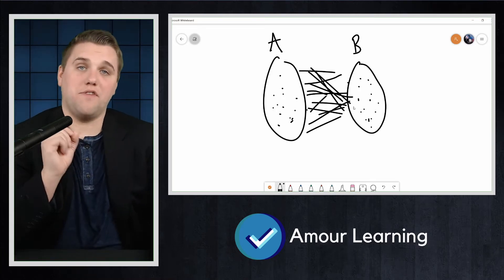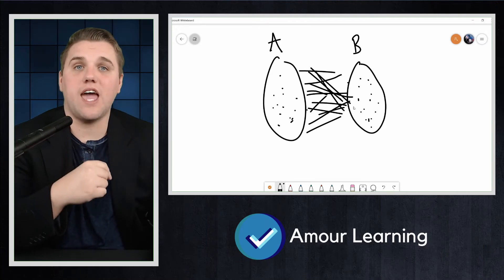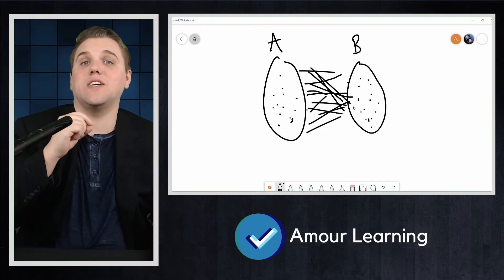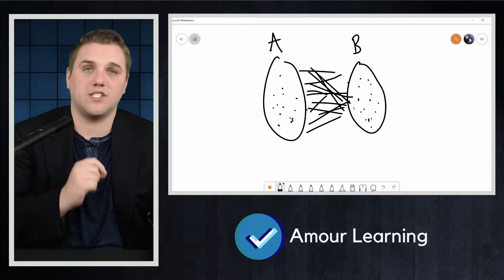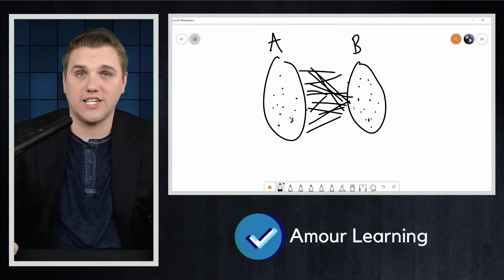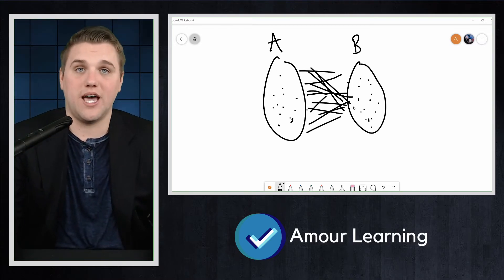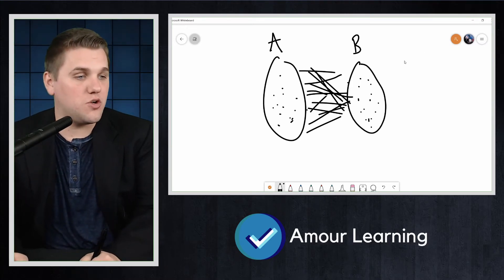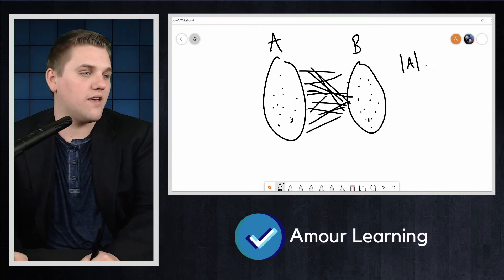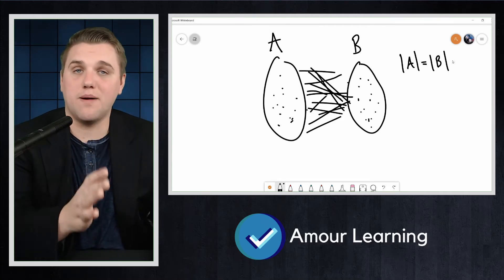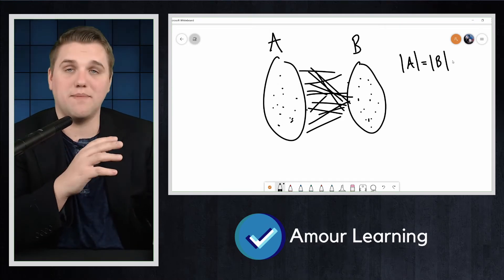A matching of A is a subset of the edges for which each vertex of A belongs to exactly one edge of the subset, and no vertex in B belongs to more than one edge in the subset. In practice, we assume that the size of A equals the size of B. The two sets have the same number of vertices in this case.